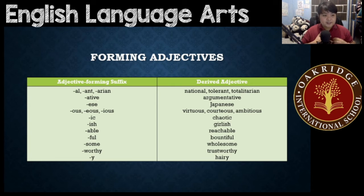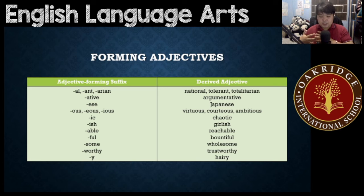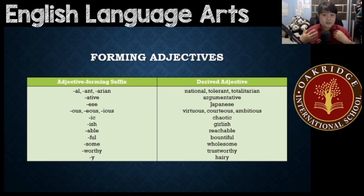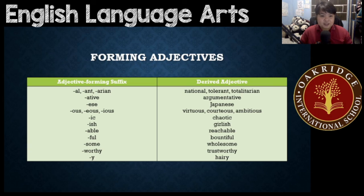So these are all different kinds of adjective-forming affixes, whether prefixes or suffixes. When you add them to words, they turn into adjectives, and these adjectives are called derived adjectives. So that pretty much ends our topic for forming adjectives.